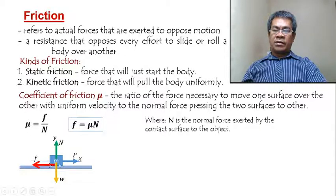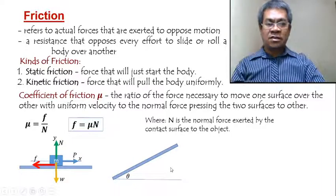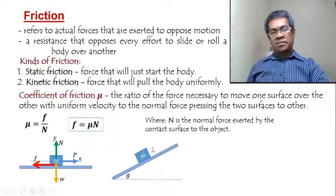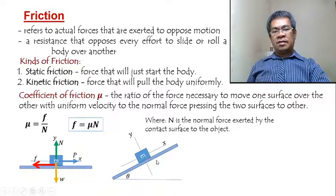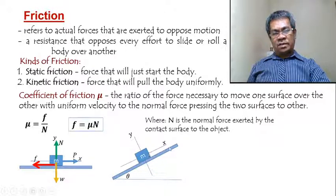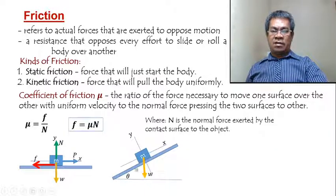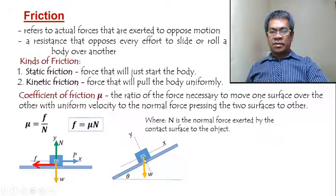If we have contact, then we have a normal, and normal provides friction always. Now what will happen if we have an inclined surface? If we place the object on top of it and overlay the Cartesian coordinate system and apply a force on the positive x-axis, take note that weight is always downward, so there must be an angle from the assigned y-axis.